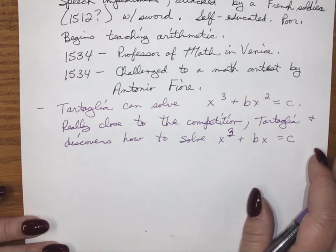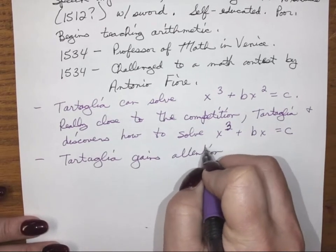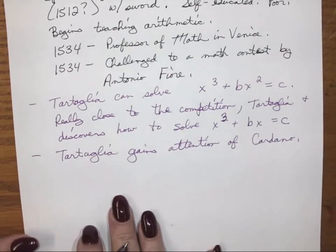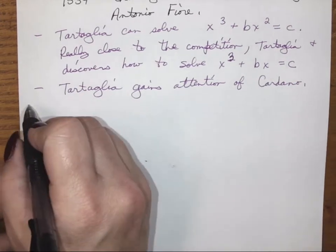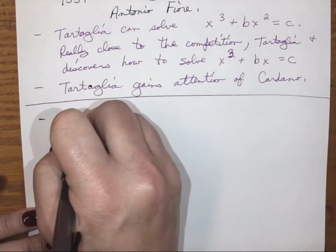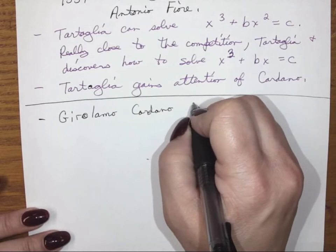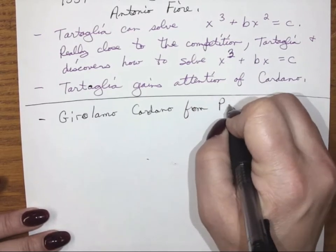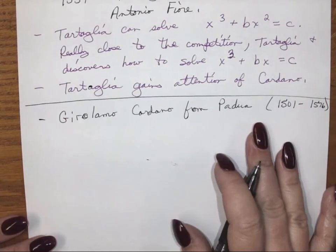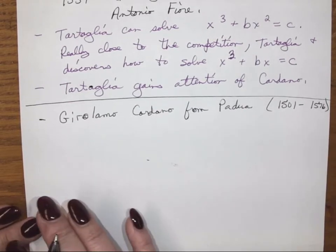Through this competition, Tartaglia gains the attention of a guy named Cardano. His name is Girolamo Cardano — an Italian from Padua, P-A-D-U-A — his dates are 1501 to 1576. His dates are pretty close to Tartaglia's (1500 to 1557), so they're contemporaries; Cardano just lived longer.